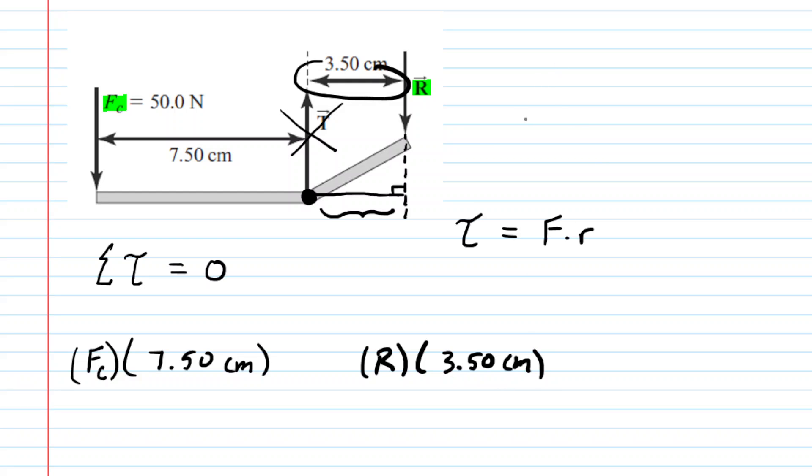Now we want to decide whether that will be positive or negative torque. Again, you can do the pencil trick. Take the right side of the lower jawbone, pin it down at this position here with one hand, and then take your other hand and press down on your pencil on the far right end. And if you do that, you should see your pencil tend to rotate in a clockwise direction. Because it's clockwise, that would produce a negative torque. So let's make sure we put a minus sign in our computation here. This is all going to be set equal to zero.